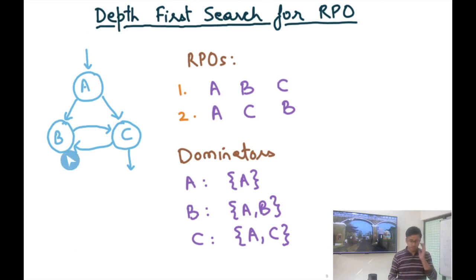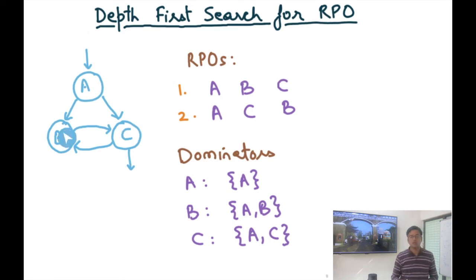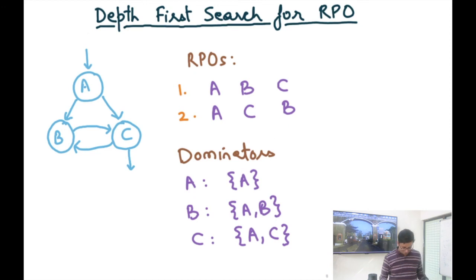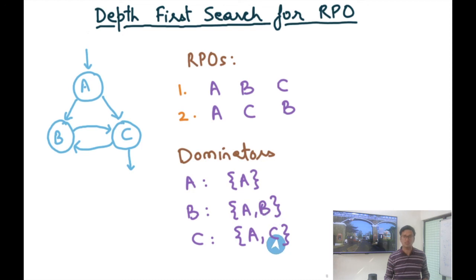Here's a more elaborate example: nodes A, B, C with a cycle between B and C. I claim that A, B, C and A, C, B are both valid RPO orders. If I start with A and pick B first, I get RPO order A, B, C. If I pick C first, I get A, C, B. In either case I'm going to get the same set of dominators. It doesn't really matter which RPO you pick — whatever RPO you choose, the DFA algorithm will finish in a single RPO pass and you'll get the same dominator solution. For example: A is dominated by {A}, B is dominated by {A, B}, and C is dominated by {A, C}.